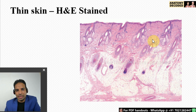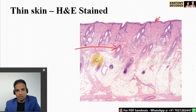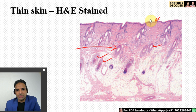Here is an H&E stained section of thin skin. You can appreciate the stratified squamous keratinized epithelium, followed by dermis and then hypodermis. The rounded structures seen are hair follicles in cross-section. These are sebaceous glands. So hair follicles, sebaceous glands, and stratified squamous keratinized epithelium are the key identification features for a thin skin slide.